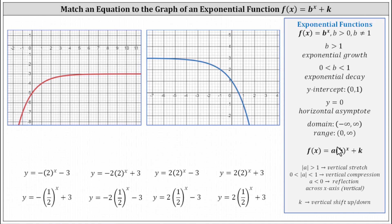Now let's talk about how the value of a affects the graph of the exponential function. If the absolute value of a is greater than one, we have a vertical stretch. If the absolute value of a is between zero and one, we have a vertical compression. And if a is negative, we have a reflection across the x-axis, or a vertical reflection.